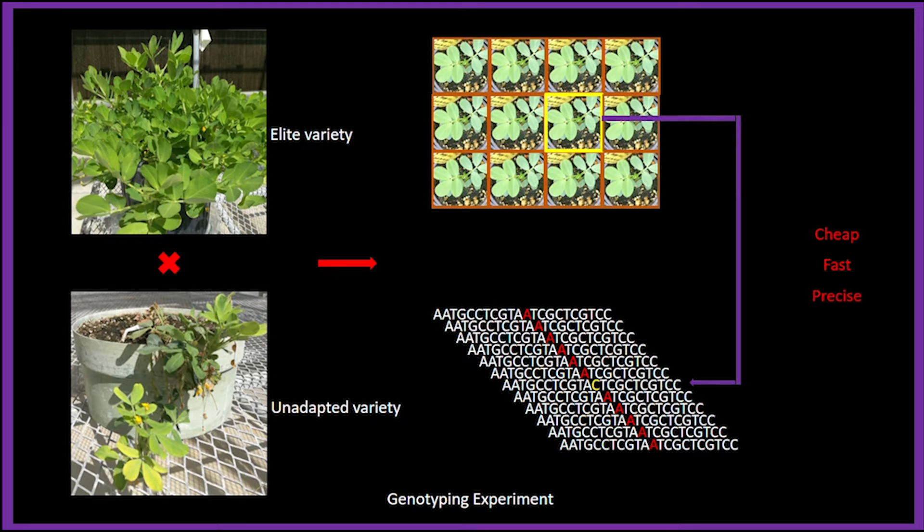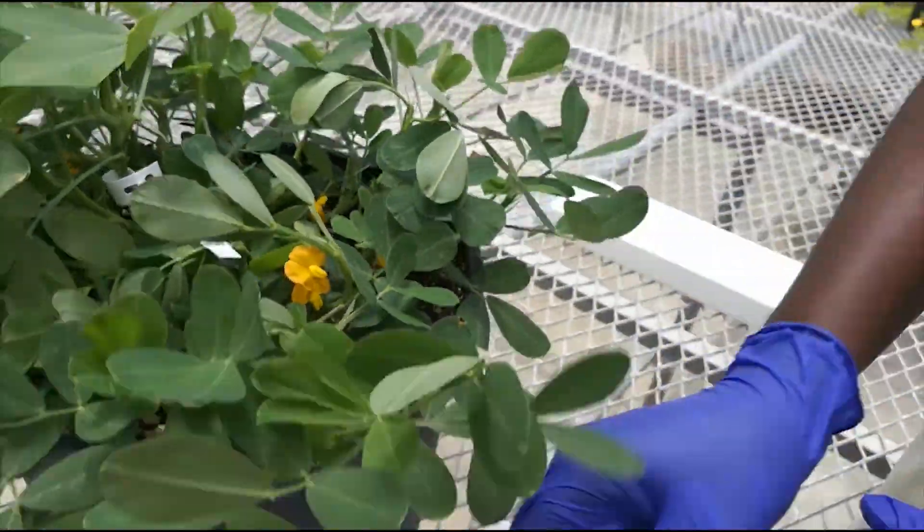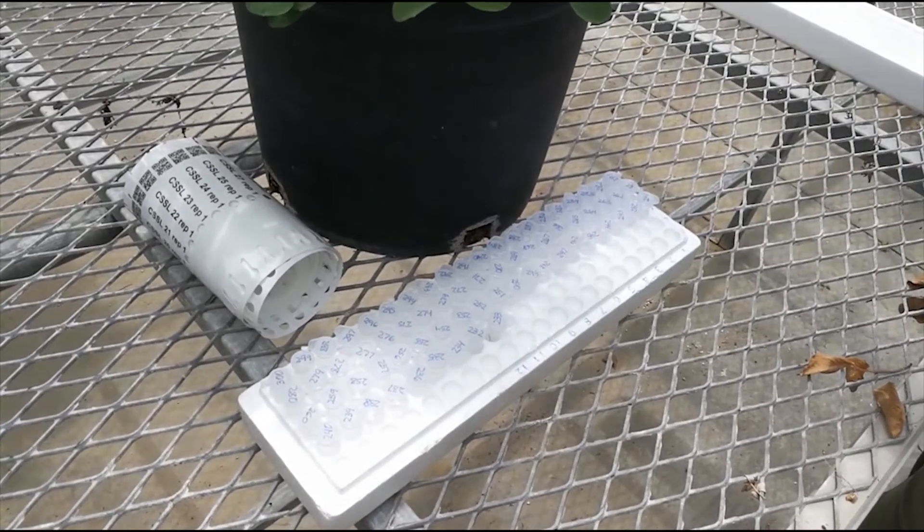Now I'm going to give you a quick overview of a typical genotyping experiment. The first thing I'll do is to harvest a leaf sample from the greenhouse.